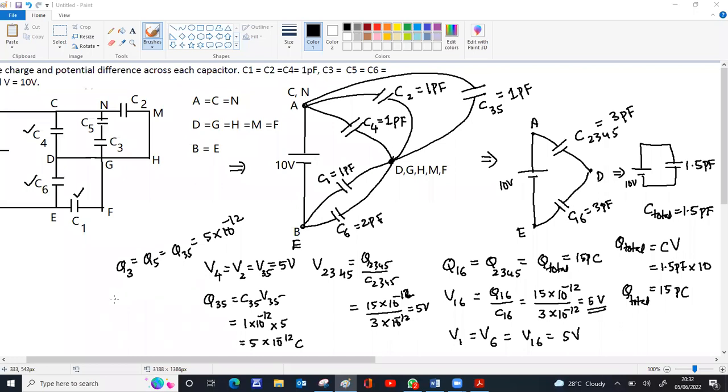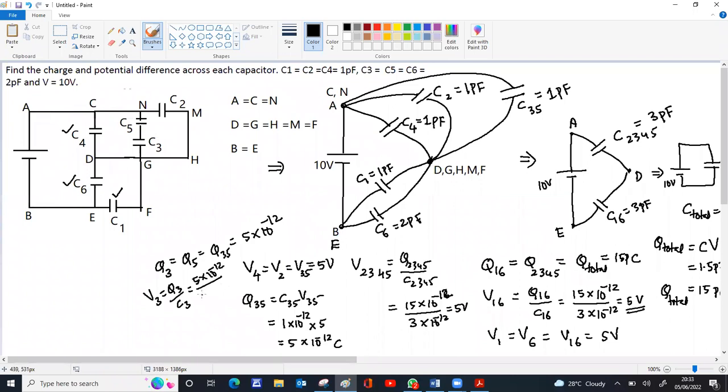So we can find V3. V3 is Q3 by C3, 5 into 10 raise to minus 12 by C3. C3 is 2 into 10 raise to minus 12. It will be 2.5 volts. So that is same as V5 also, because C5 is same. V3 is same as V5.